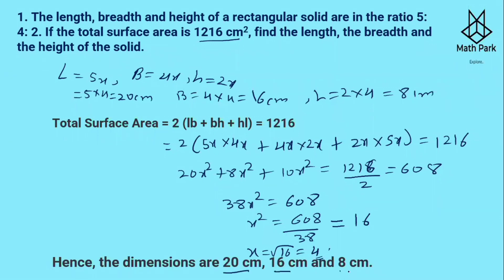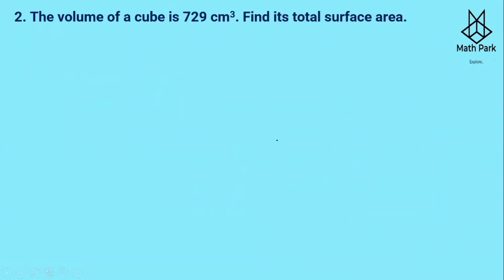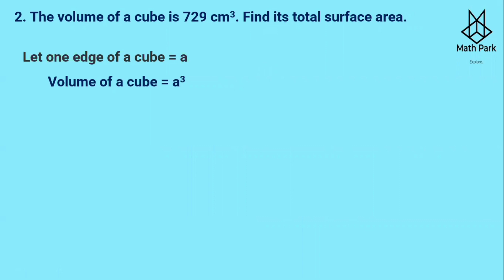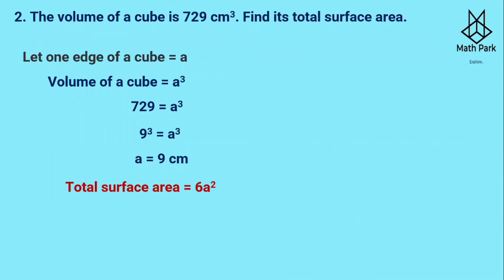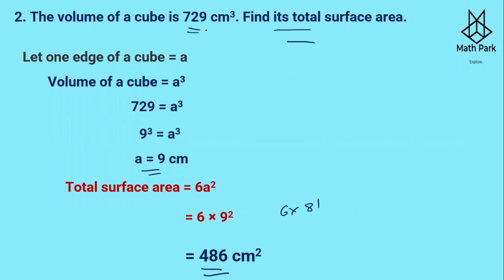Question number two: The volume of the cube is 729 cm³. Find the total surface area. The volume of a cube is side³. Let us take the length of one edge of a cube to be 'a'. Volume = a³ = 729. Since 729 = 9³, we get a = 9 cm. Total surface area = 6a² = 6 × 81 = 486 cm².